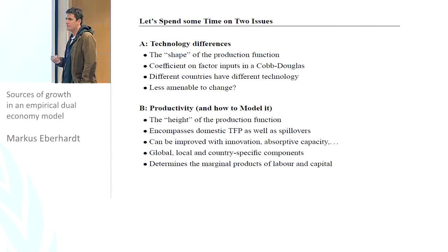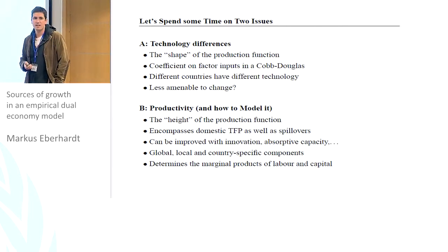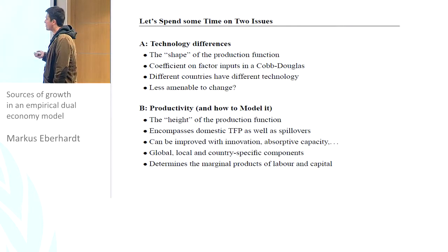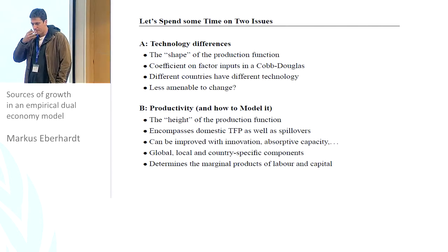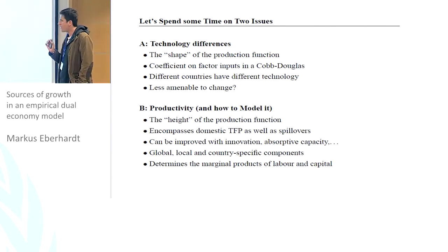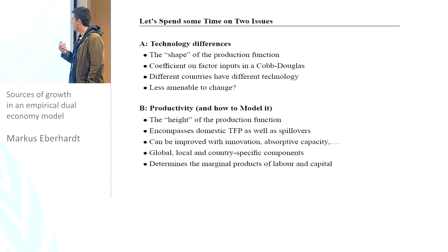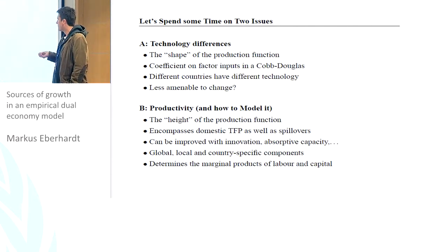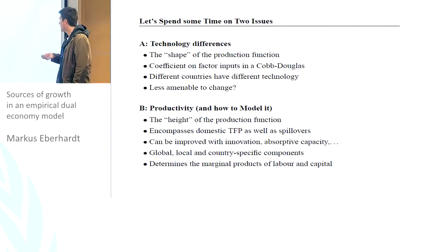How can you improve technical progress in your country? You can innovate, you can invest in R&D and carry out efforts to improve innovation. But you could also try and capture more of these ideas that come from elsewhere — absorptive capacity. For instance, in the US, the visas for highly skilled individuals are means and ways of capturing ideas from outside the country. So productivity has a global element — global technological progress — there's a local or regional element, and then country-specific.